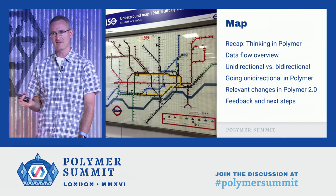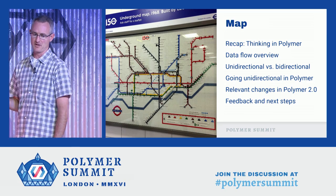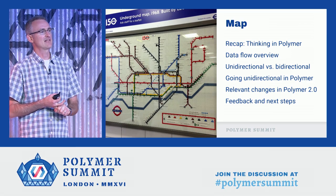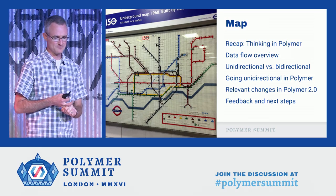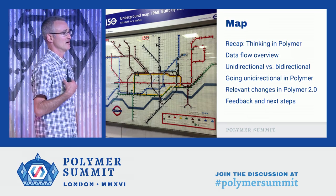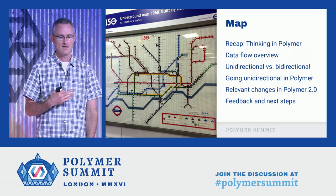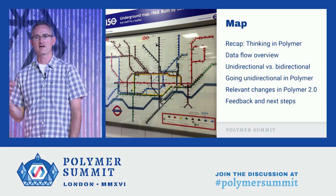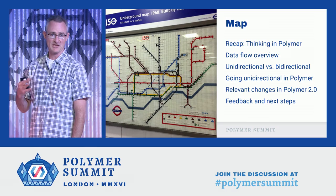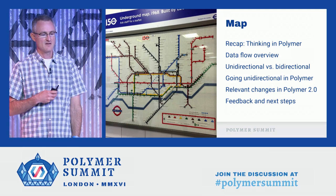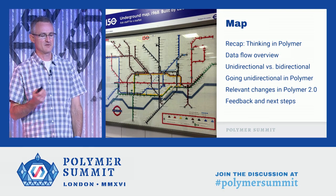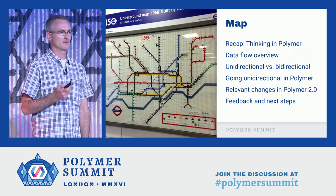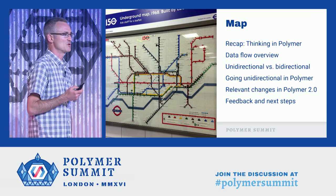So with that spoiler out of the way, let's take a quick look at how we'll spend the next 20 minutes. First, I'm going to spend some time recapping last year's Polymer talk with a focus on the aspects most relevant to data flow. Then we'll reflect on some key differences between building elements and building apps, explore some trade-offs between unidirectional and bidirectional flow, and touch again on a few of the changes Rob mentioned around Polymer 2.0 in this area.